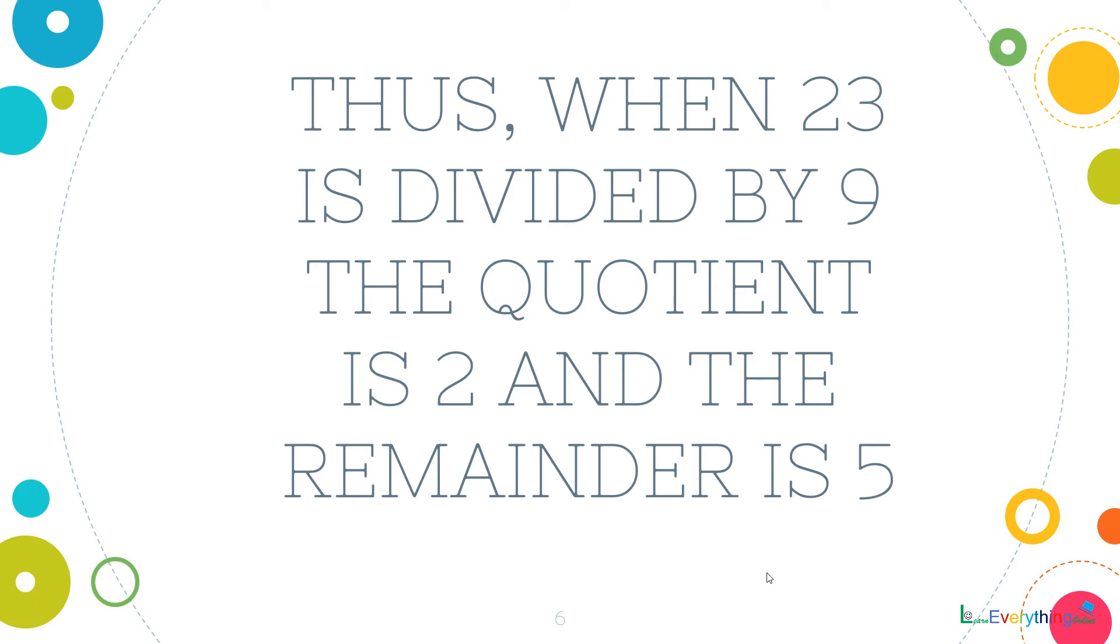Thus, when 23 is divided by 9, the quotient is 2 and the remainder is 5.